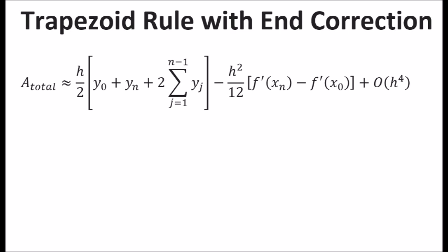A represents the area beneath a curve and can be calculated by adding up y values according to this expression. Notice the last two terms: one has an h squared and the other has an h to the fourth. These represent error terms.